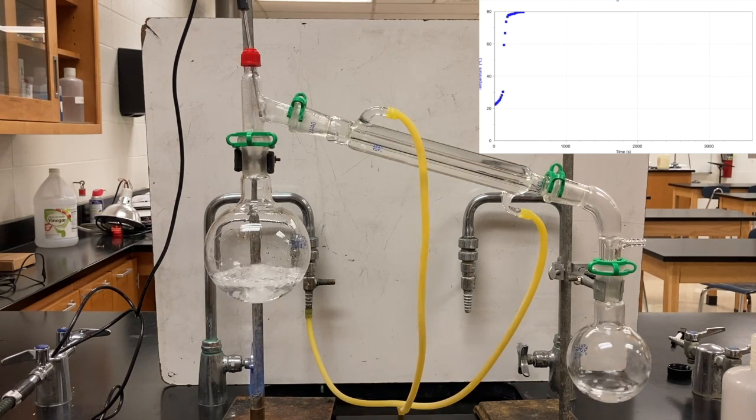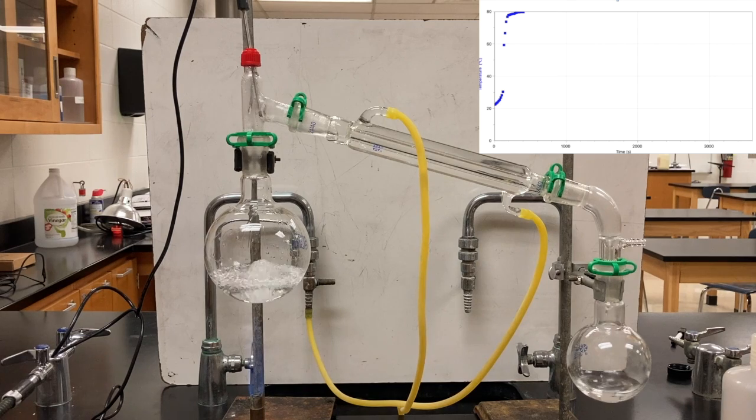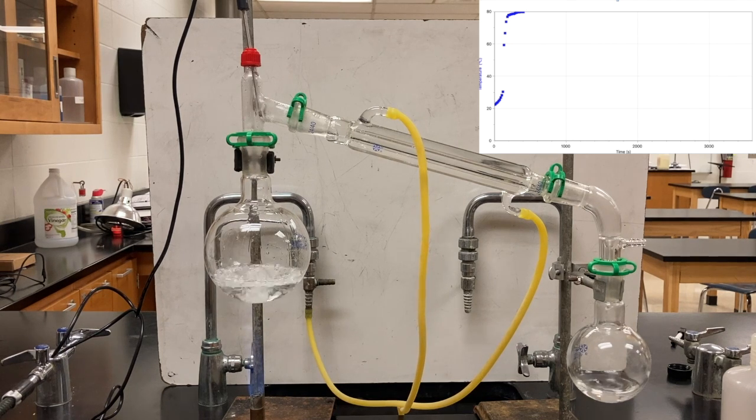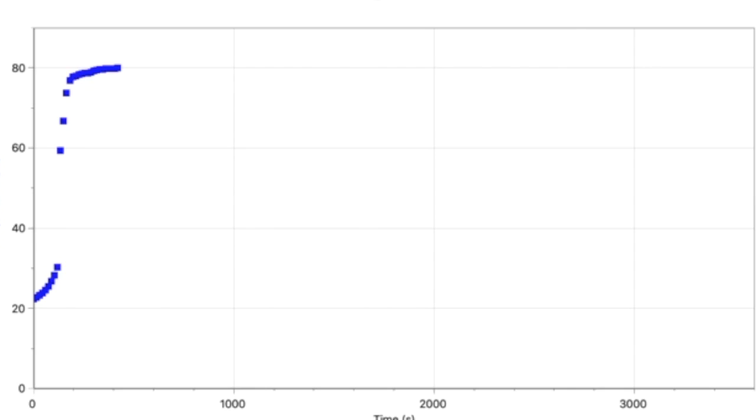You can see now that there's a flat spot developing on the graph. That indicates that we're primarily undergoing a phase change with the energy that's being added, although it's not quite as sharp now as it would be if this was a pure substance that was vaporizing. We can see that the flat spot is at around 80 degrees, so that's not water. So that must be the boiling point or approximately the boiling point of the ethanol that is in this mixture.